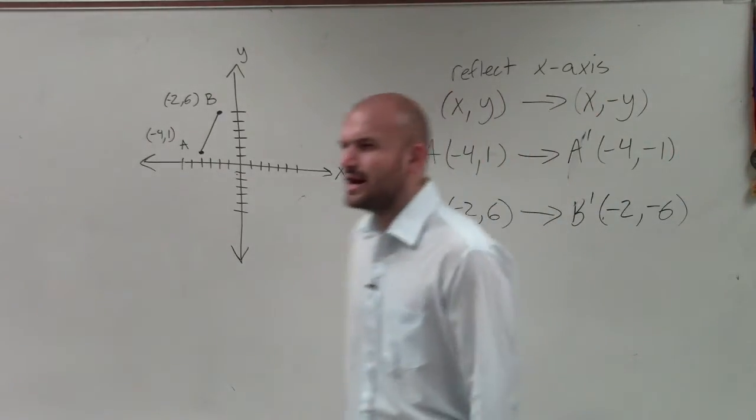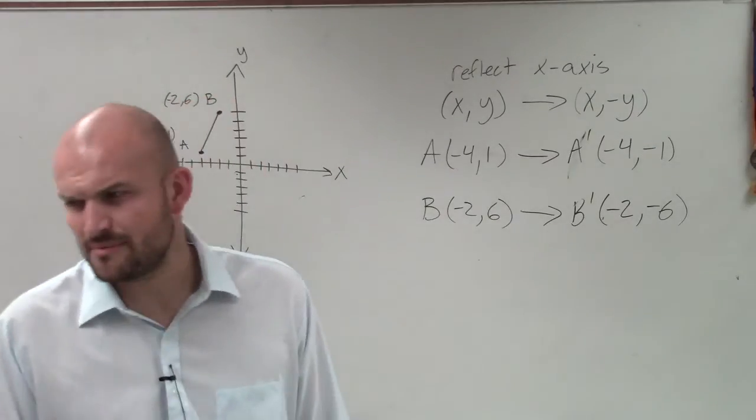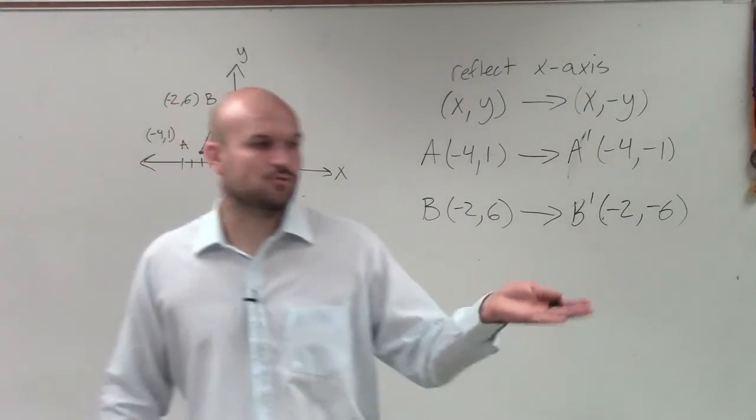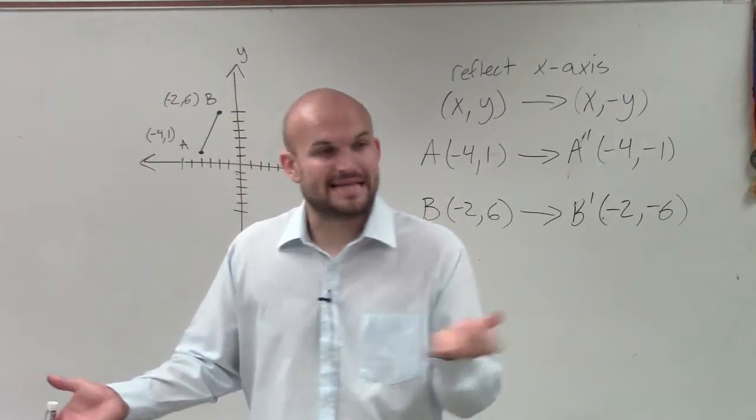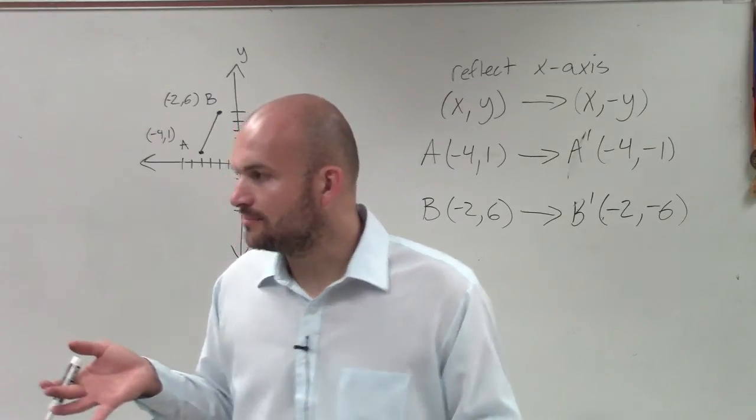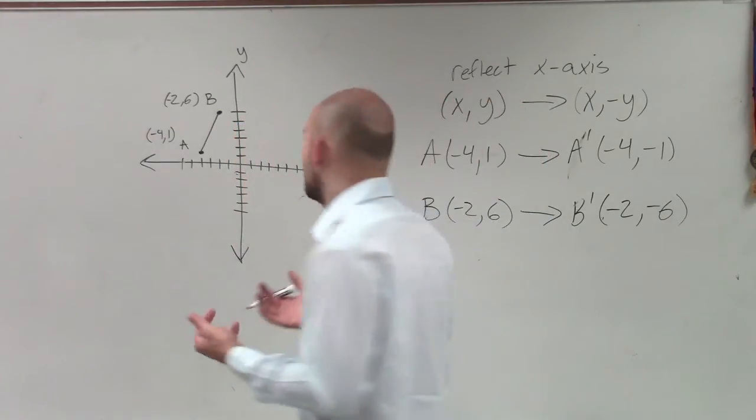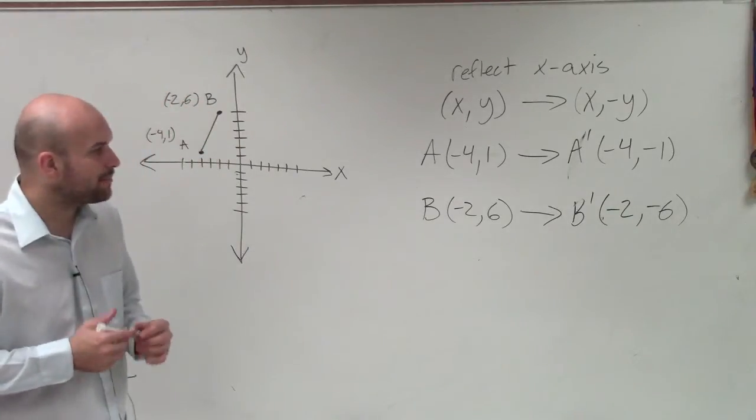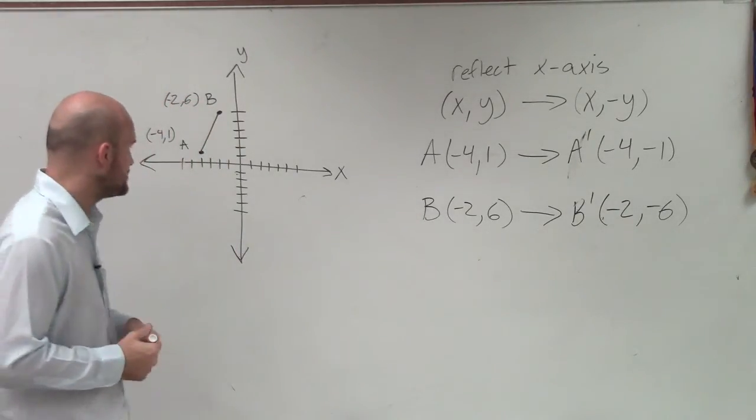Now, you might look at me and say, why are you labeling them A prime and B prime? Guys, remember when we did distance formula and we said x1 and x2, right? We had to distinguish between the x's. They both represented the x's, but they were different forms of them. Well, these are the same points, but the A prime and the B prime represent the transformations of them.